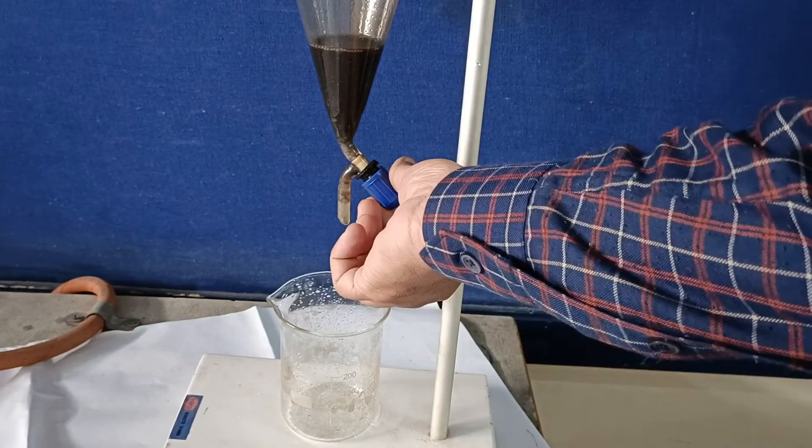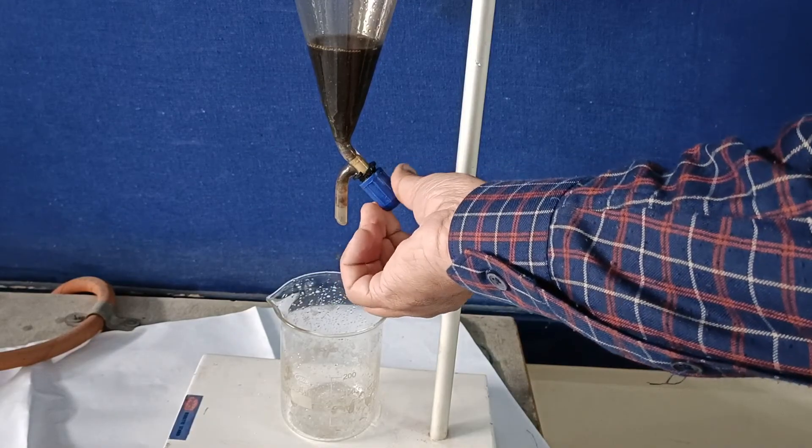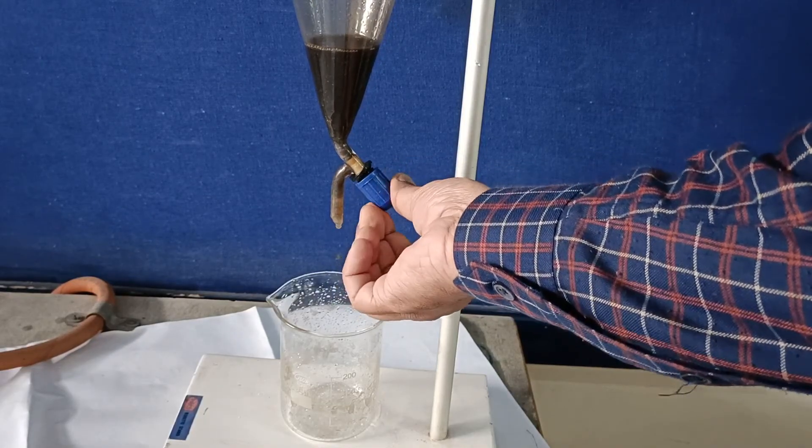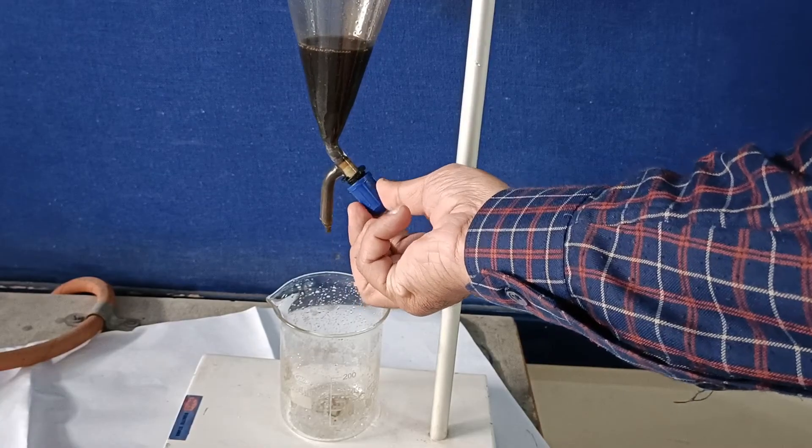Close the stopcock and place another empty beaker underneath. Open the stopcock to collect the lighter liquid.